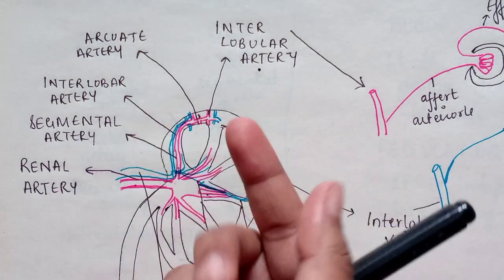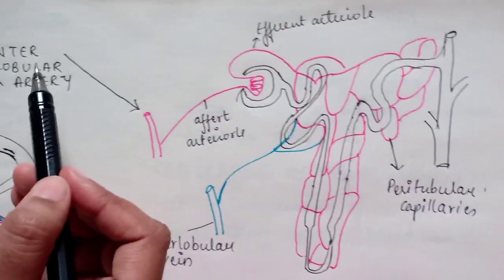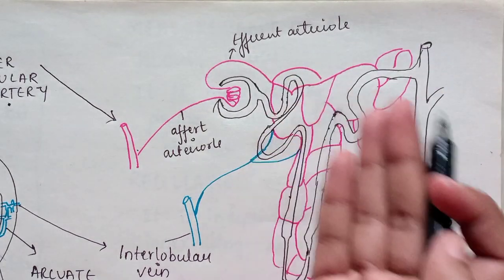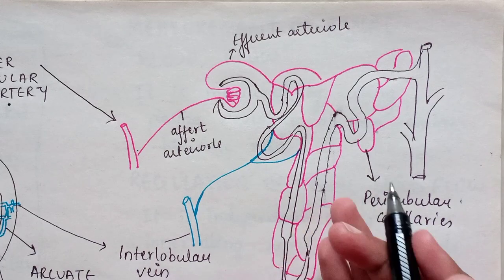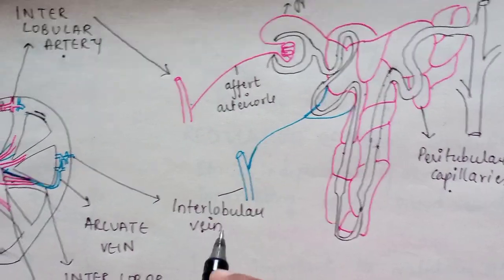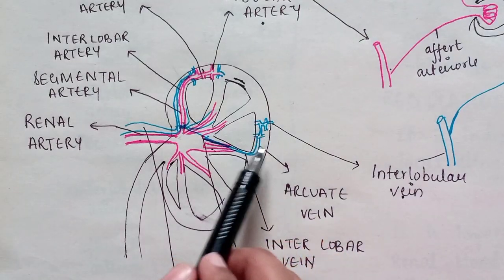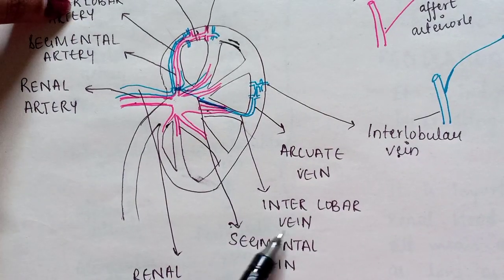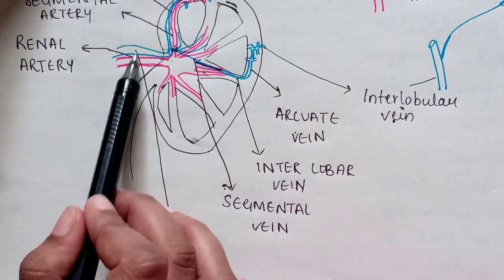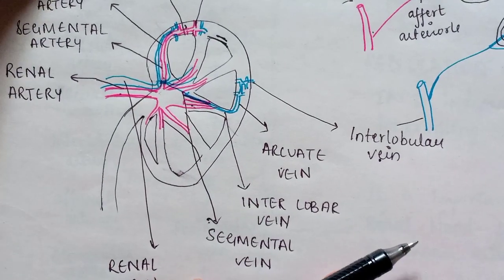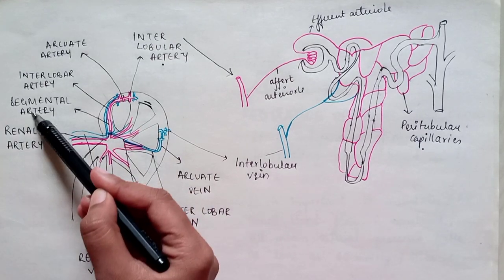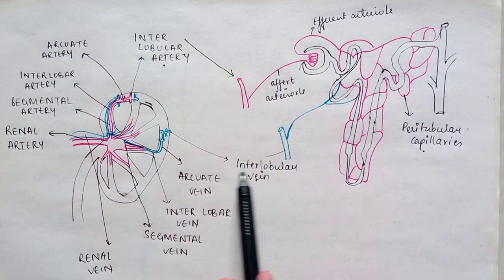Let's understand in more detail when it comes to the nephron. These interlobular arteries give branches to the afferent arteriole and efferent arteriole, which we studied earlier. These further form the peritubular capillaries, and they filter out and come out into the interlobular vein. This interlobular vein comes back to the arcuate vein, then to the interlobar vein, to the segmental vein, and finally to the renal vein. The veins and arteries accompany each other — this is how the arteries and veins are placed.